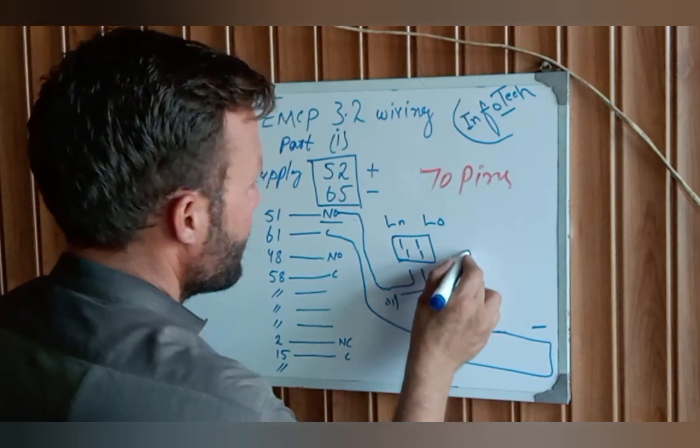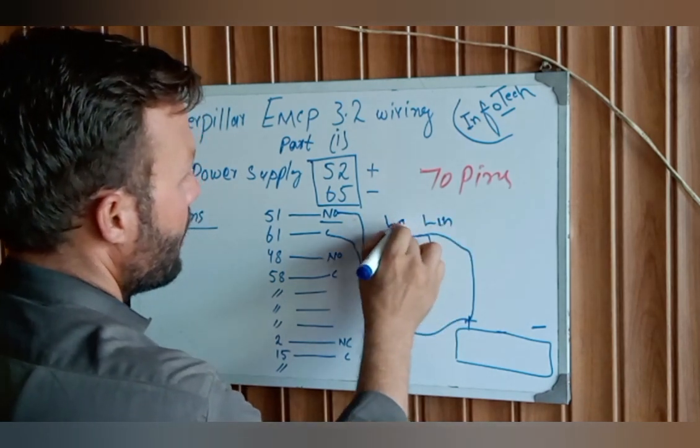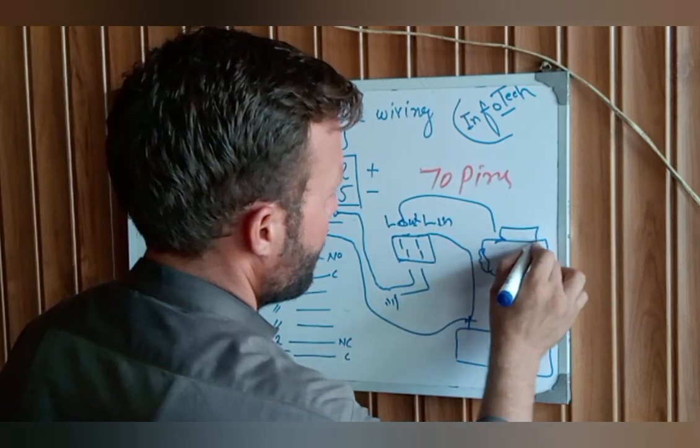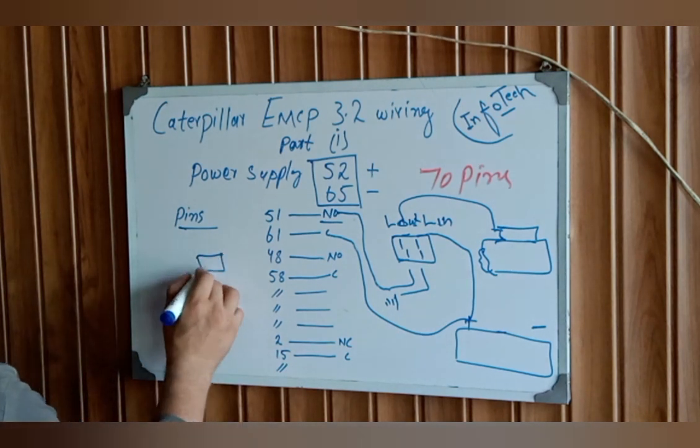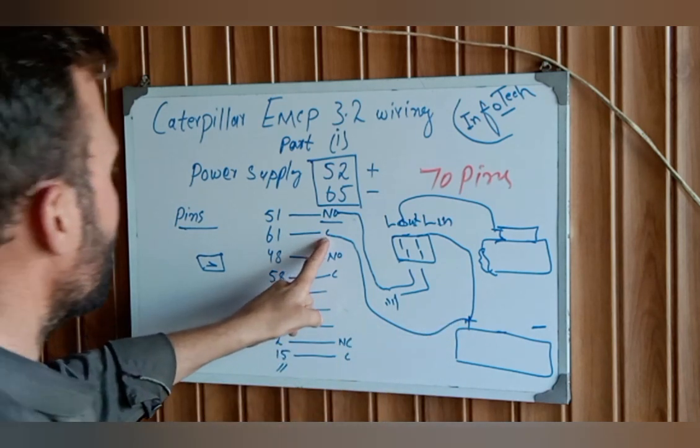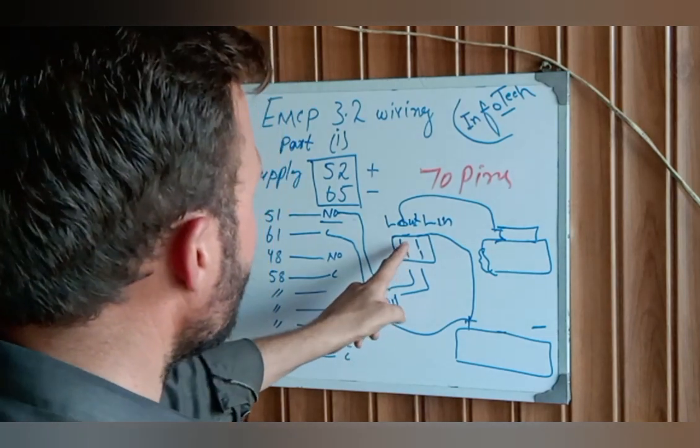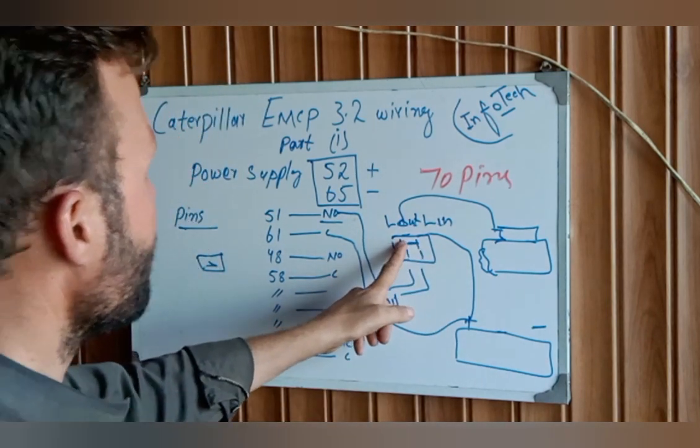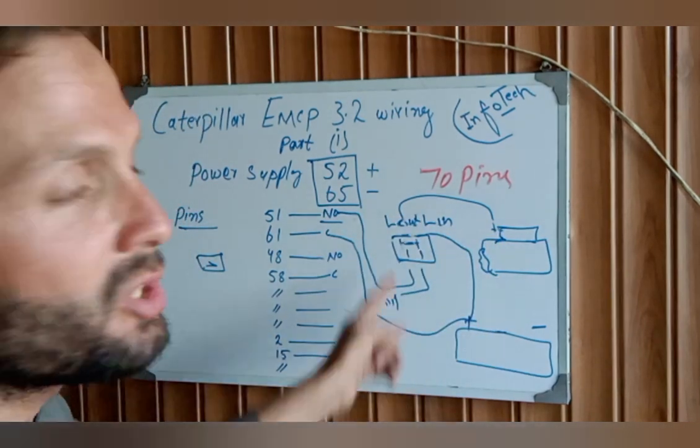We need to take the load in and load out. This is our starter motor. To provide the starter motor, when we push the EMCP green button for starting commands, the EMCP checks, then supplies through the common and gives output through the normally open, and energizes the starter motor relay. When the starter motor relay is energized, these two points are closed. After that, these normally open contacts close to NC, and this sends command again to the starter motor. Our engine starts turning.